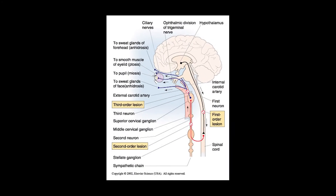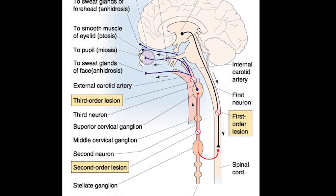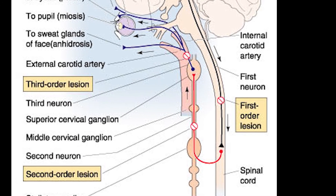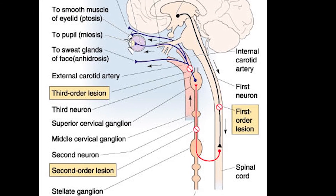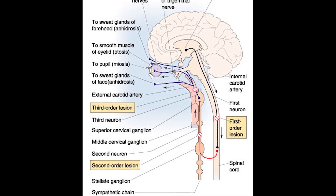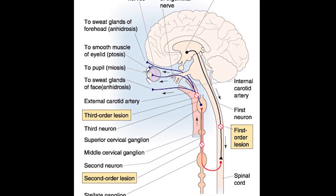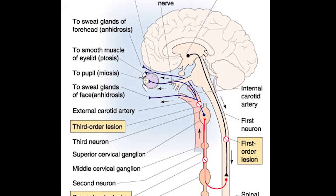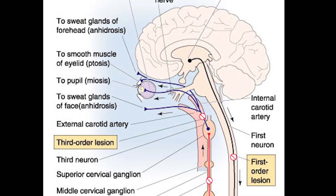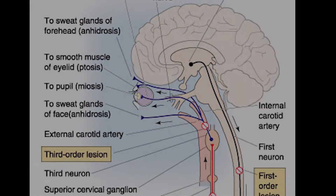Now mydriasis. This one's a three-neuron system, with the first starting at the hypothalamus. It goes all the way down from the hypothalamus to about C8-T2, then travels outside of the spinal column and back up, where it hits the superior cervical ganglion. From there, the third-order neurons go to the pupillary dilator muscle to dilate the pupil, some smooth muscle in the face, and some sweat glands. We'll talk more about the sweat glands and facial branches in the Horner syndrome video.